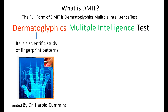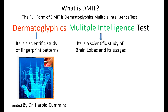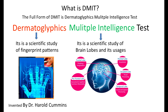Multiple Intelligence Test is a scientific study of brain lobes and their usages. We have five brain lobes that we study while doing multiple intelligence: the frontal lobe, prefrontal lobe, parietal lobe, occipital lobe, and temporal lobe.